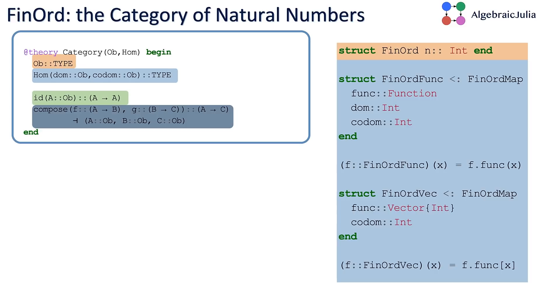We want to take this theoretical object, the category, and instantiate it with Julia types. We're going to introduce three types: FinOrd, FinOrdFunc, and FinOrdVec.